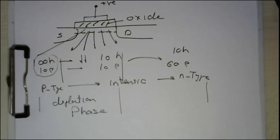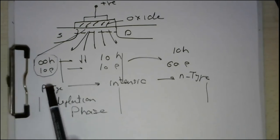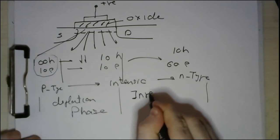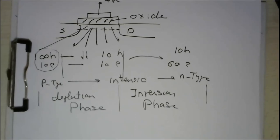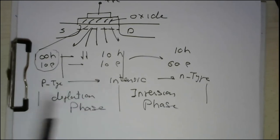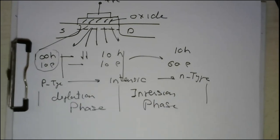So this is the overall scenario. We divide the process into two sub-processes. The first is responsible for getting rid of the majority carriers, which are holes — this is depletion. The second step is to convert the channel to n-type — this is what we call the inversion phase. So to invert your channel from p-type to n-type, you do it in two steps: depletion first, then inversion.